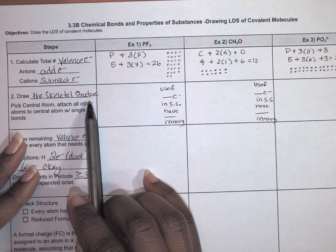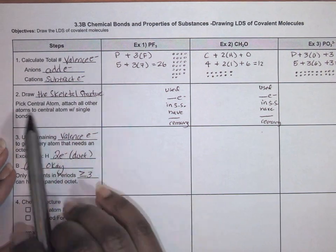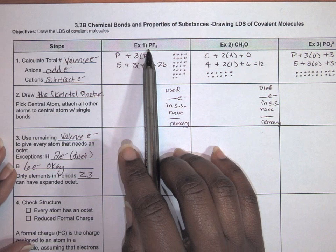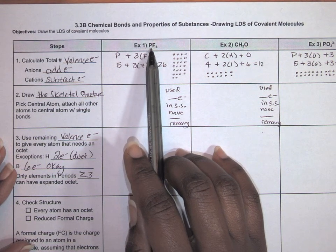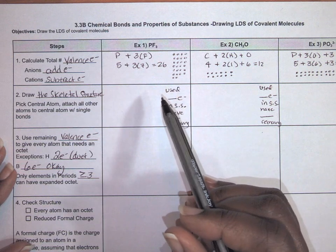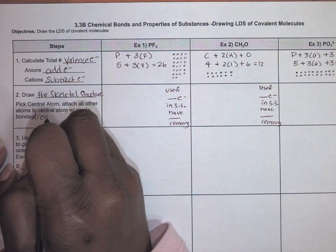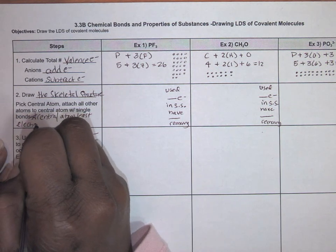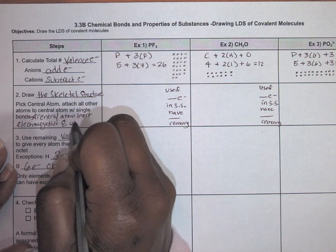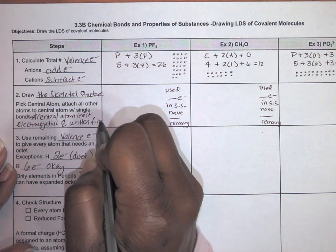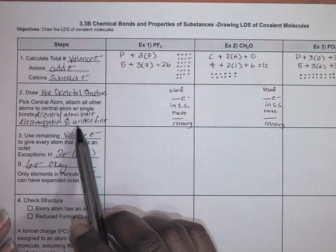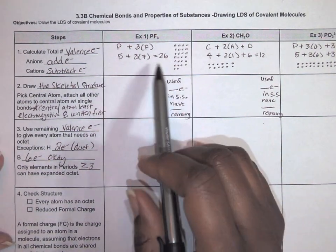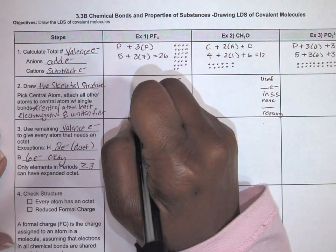The next step is to draw the skeletal structure. The way you draw it is to pick a central atom and attach all the other atoms to it with single bonds. Typically the central atom is written first in the formula, and it will also be the least electronegative. So we put phosphorus in the center — it's least electronegative and written first. The exception is that hydrogen can never be a central atom since it can only form one bond.